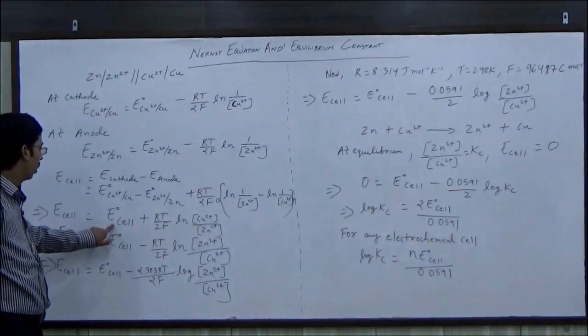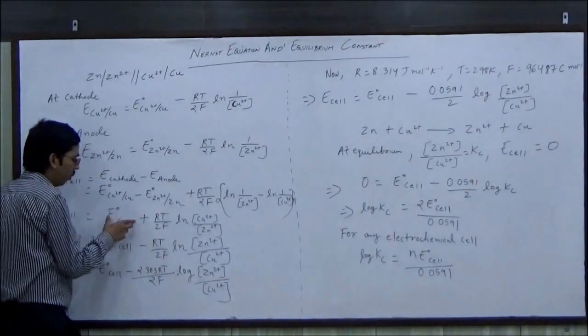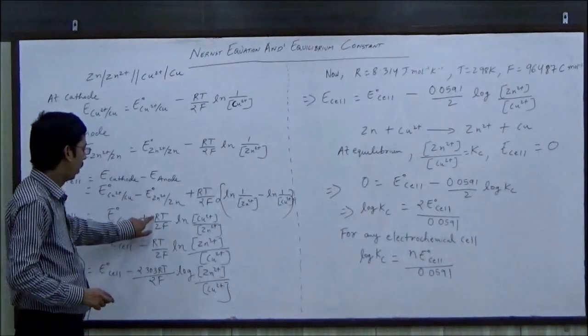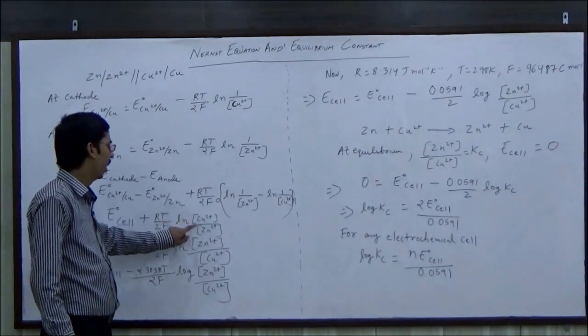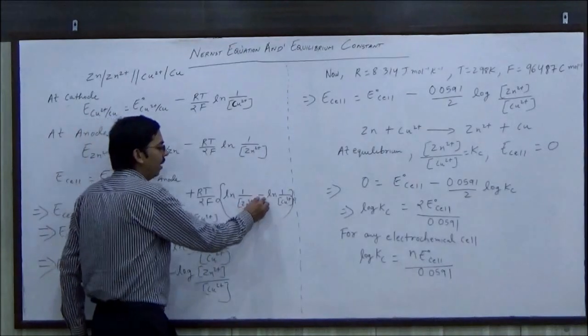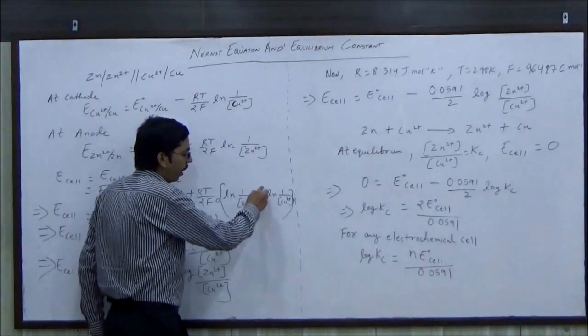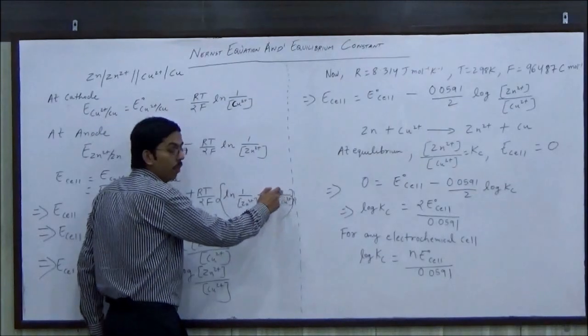Which is equal to E0 cell. E0 cathode minus E0 anode is equal to E0 cell plus RT by 2F, concentration of Cu2+ upon concentration of Zn2+. Here, minus sign with log, so we have to consider plus sign, so Cu2+ becomes numerator and Zn2+ becomes denominator.